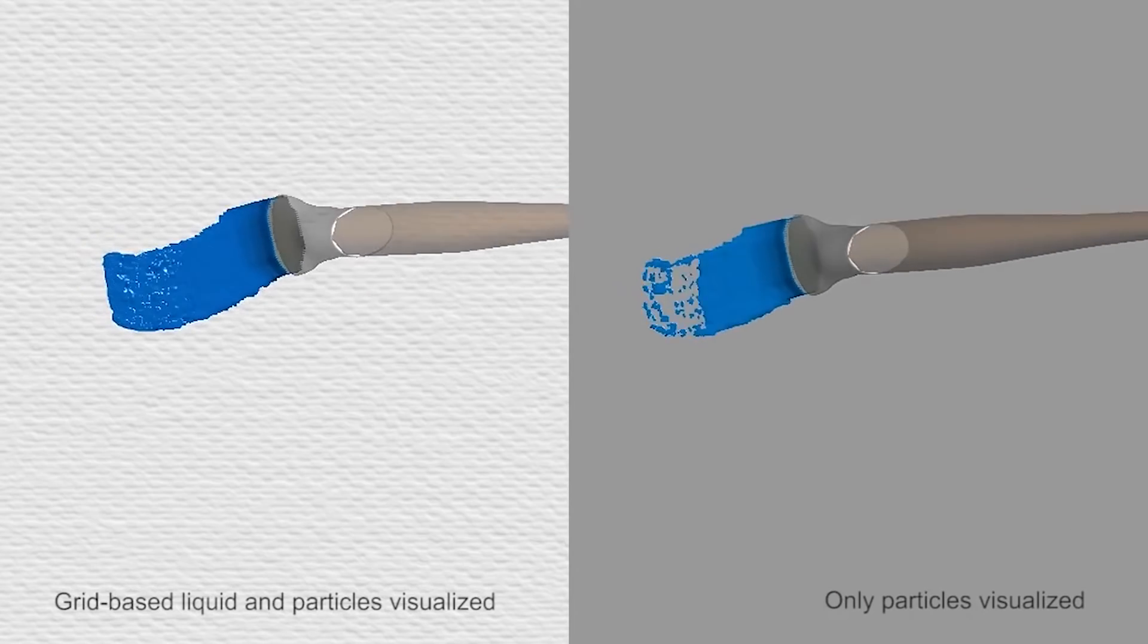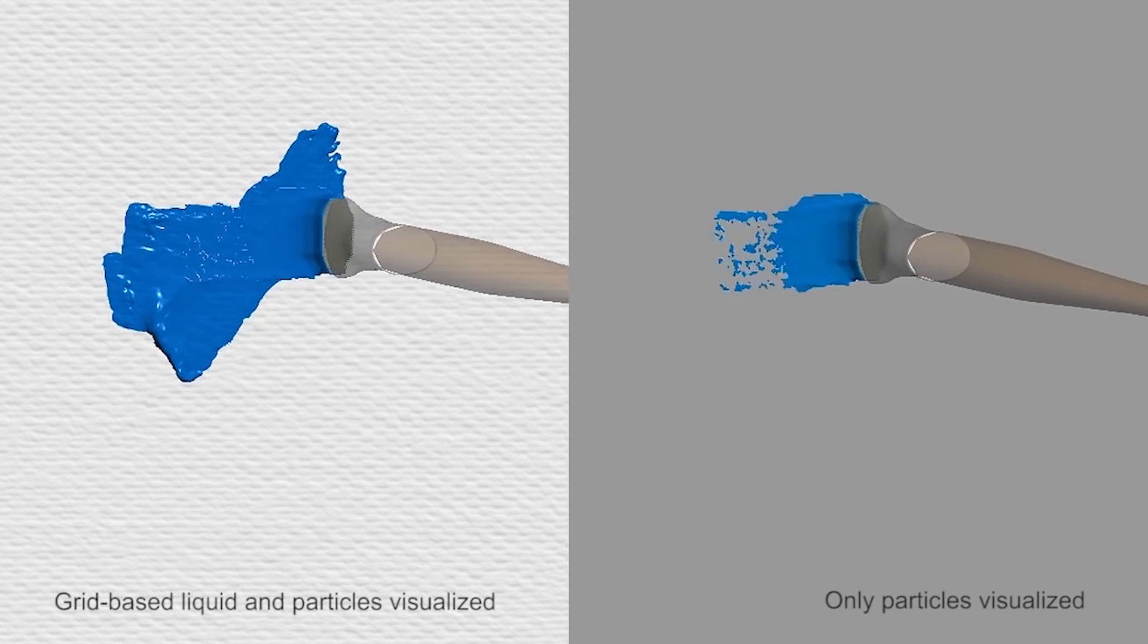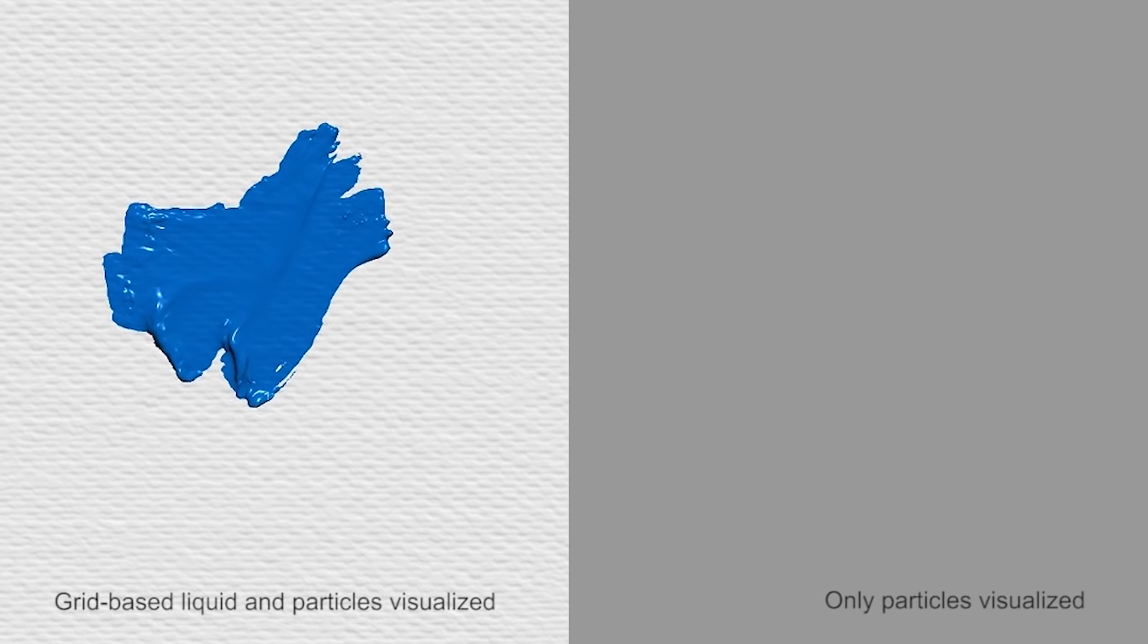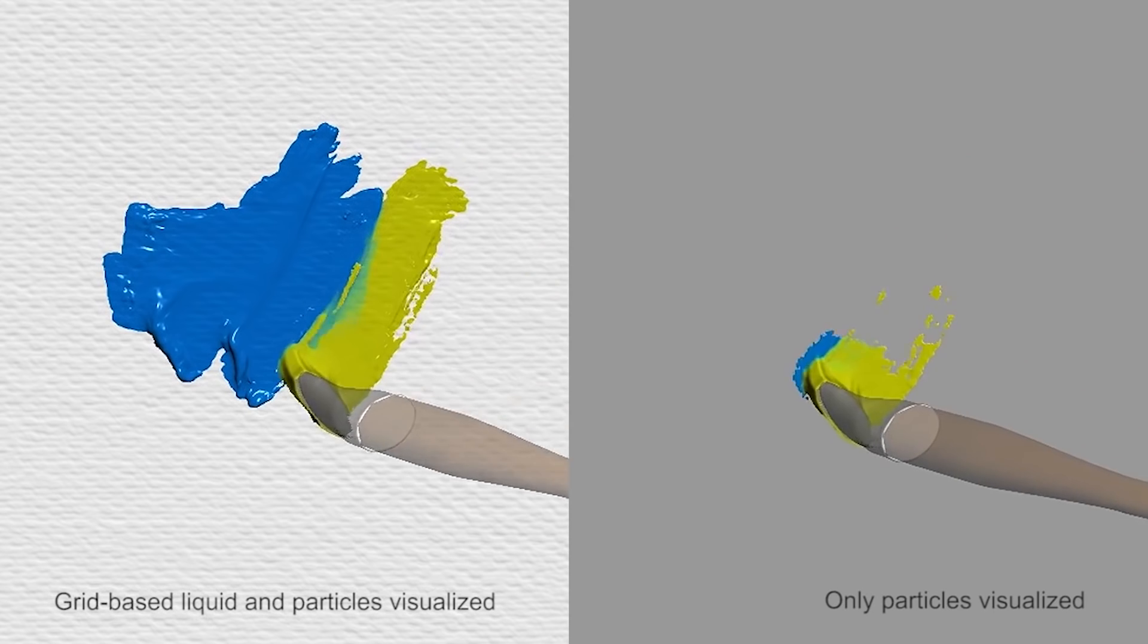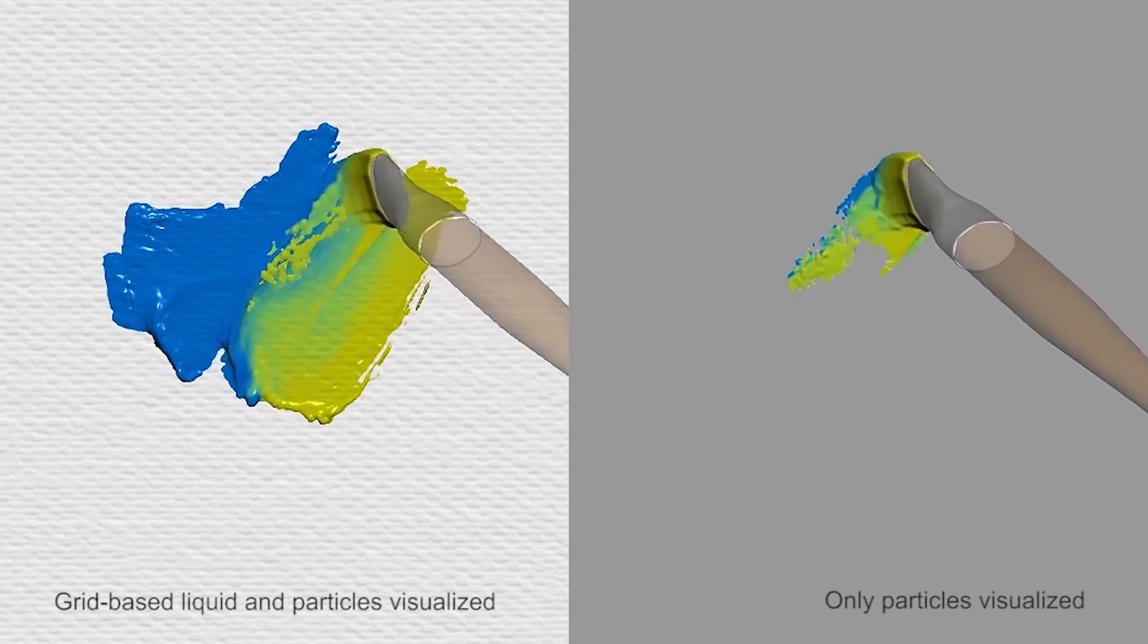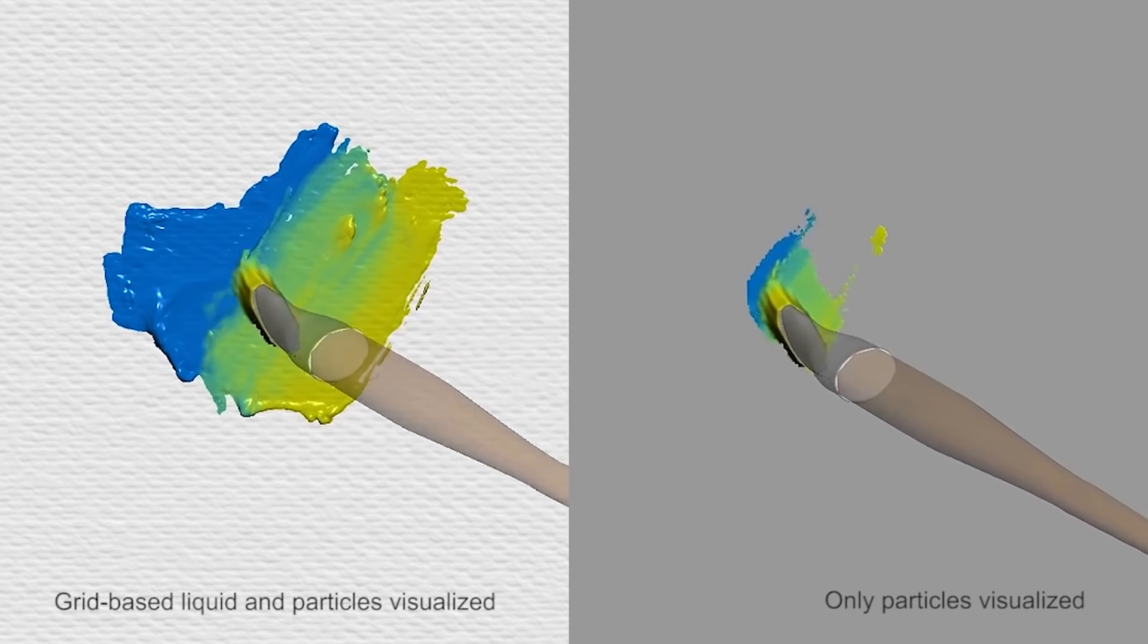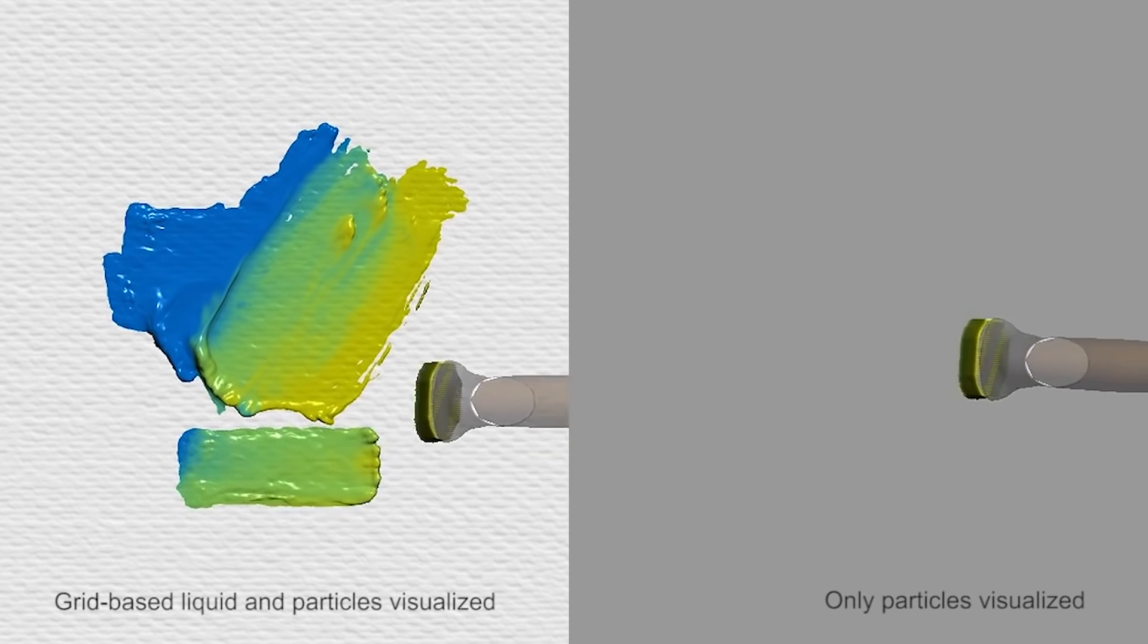For the paint, we use a hybrid particle and grid-based fluid approach. Particles are easier to track the volume when the fluid is moving fast. If the fluid is close to the brush, which means it's moving fast, we use particles. For anything further away from the brush, we use grid-based fluid.